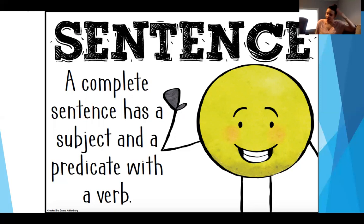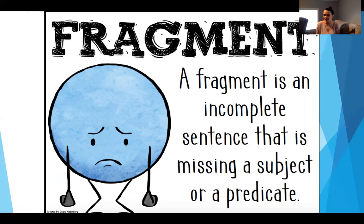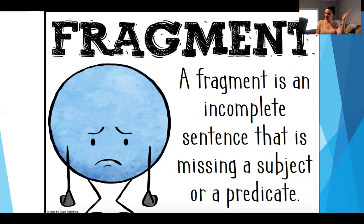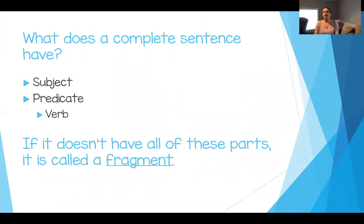You might be thinking, Miss Deacon, what is a predicate? We'll get there in just a second. But first, we need to differentiate — or tell the difference between — a sentence and a fragment. A sentence has all those parts we talked about. A fragment is an incomplete sentence; it's missing either the subject or the predicate — one of those really important parts that makes it a high quality, complete thought from beginning to end. To remind you: a complete sentence has a subject, a predicate, and a verb. The verb is inside the predicate. If it doesn't have all these parts, it's called a fragment.